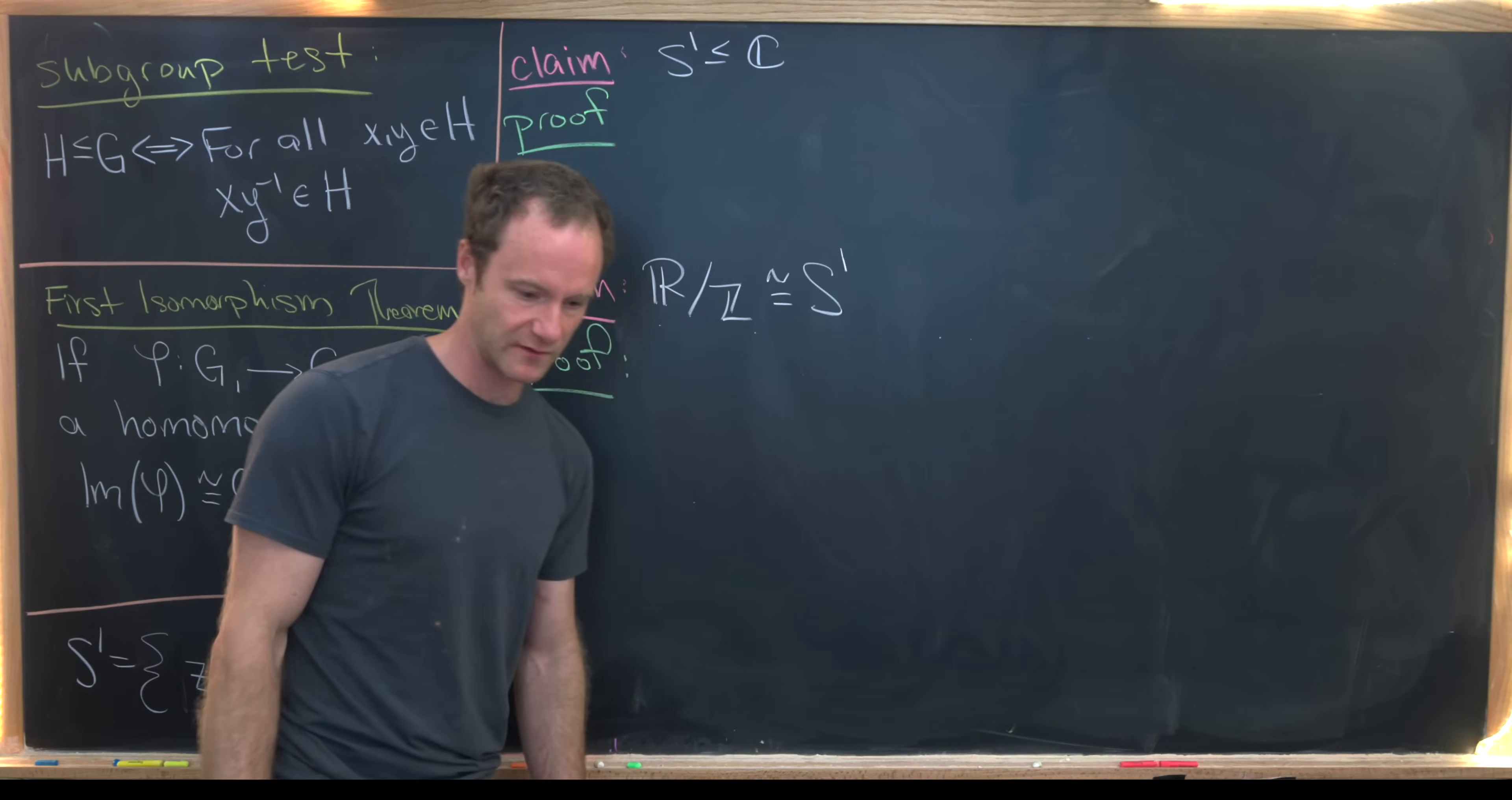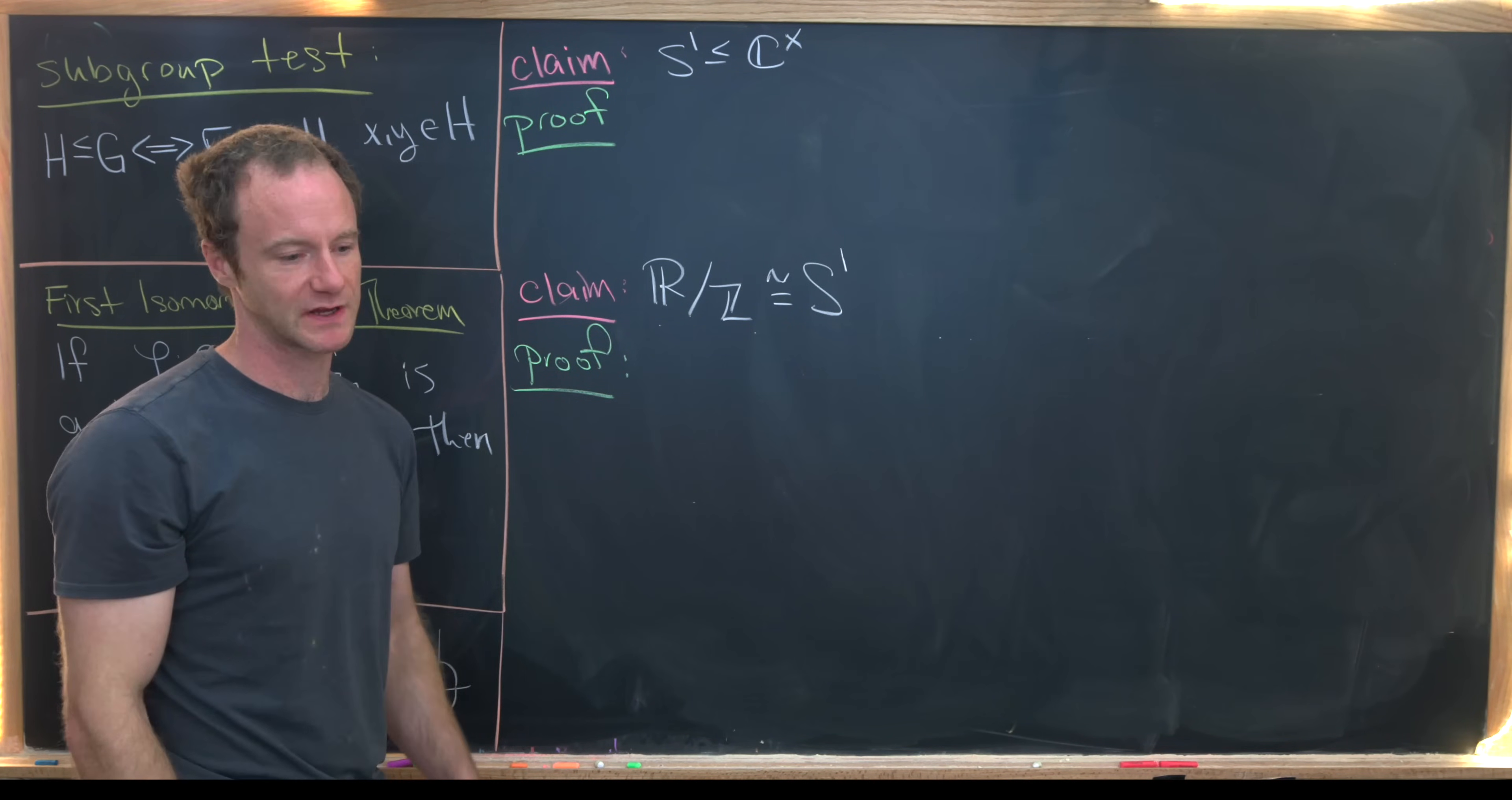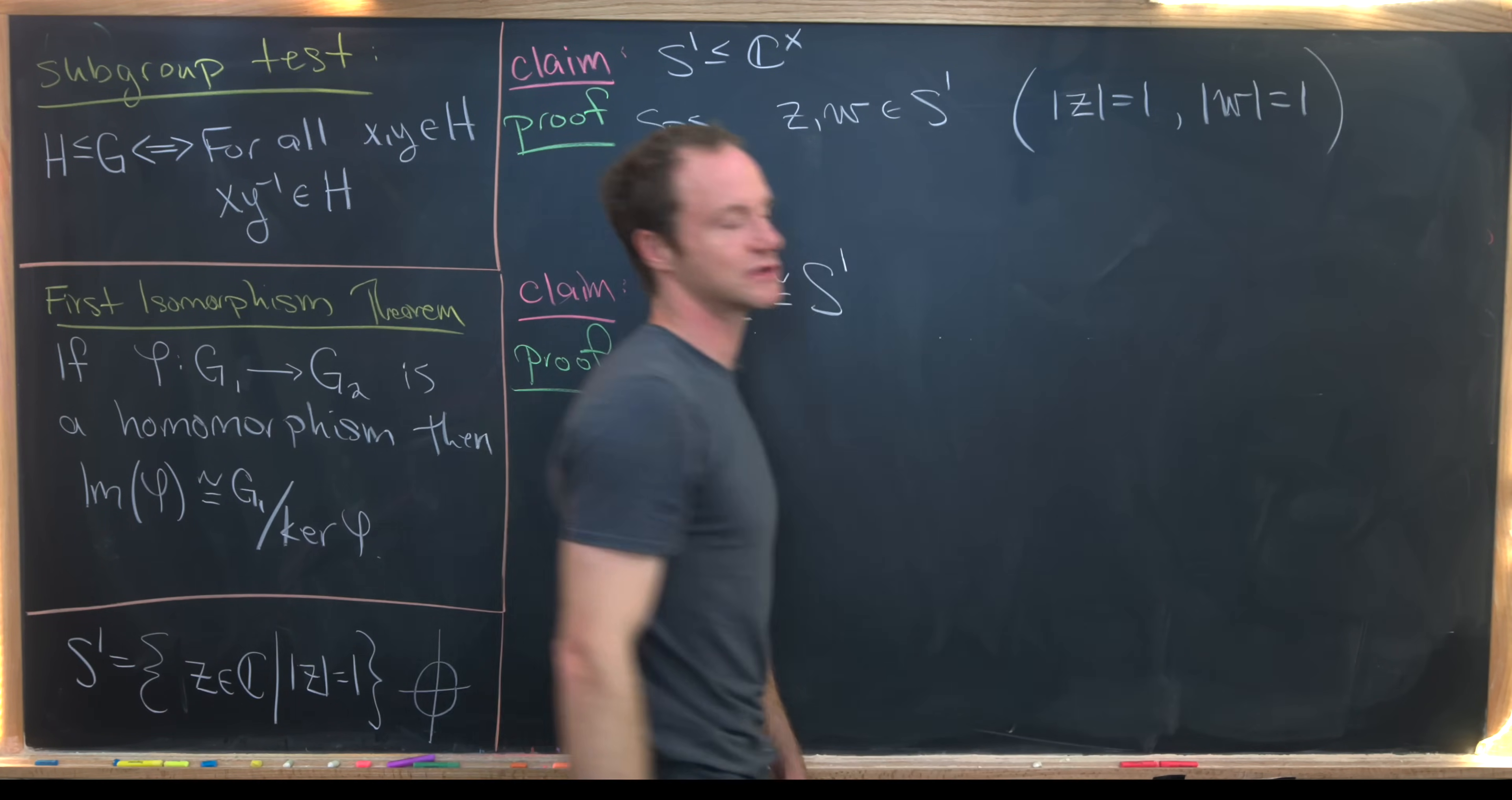So let's start with a couple of fairly simple claims. The first is that S1 under this identification is indeed a subgroup of the multiplicative group of non-zero complex numbers. So you can take the complex numbers, extract the number zero, and that forms a group under multiplication where one is the identity. This is actually pretty easy to check. So let's suppose that Z and W are in S1. So notice that means that the modulus of Z is equal to one and the modulus of W is also equal to one.